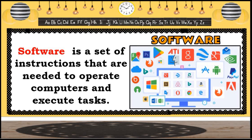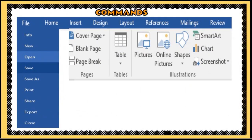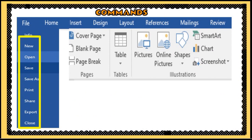Examples of software include office suites, database programs, web browsers, word processors, software development tools, image editors, and communication platforms. Software commands are words or common language recognized by the computer to access functions. Examples of commands are: open, save, save as, print, share, export, and close.